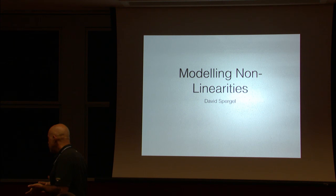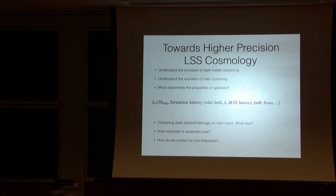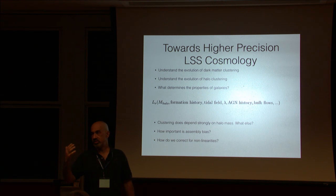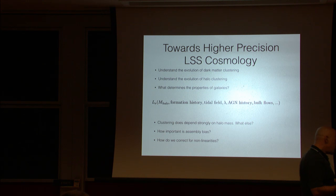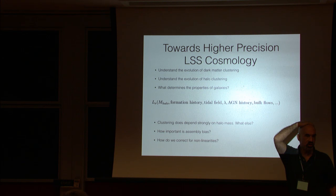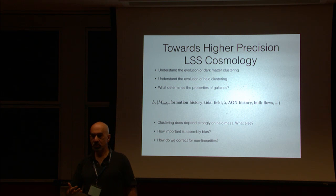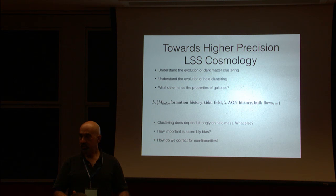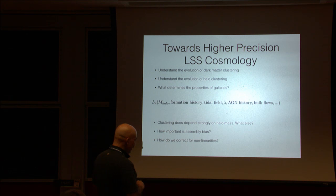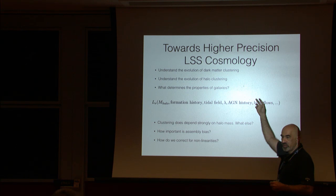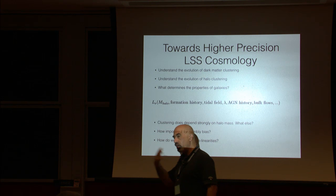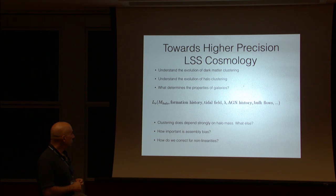The challenge is, given our understanding of initial conditions, can we understand the properties of galaxies? I think we've made pretty good progress on understanding the evolution of dark matter clusters — both in numerical simulations, where simulations agree on what you get from given initial conditions, and in good analytical theory. We now recognize the difference between the clustering of dark matter and the clustering of halos, and we're making progress understanding the evolution of halo clustering at both the computational and analytical levels.